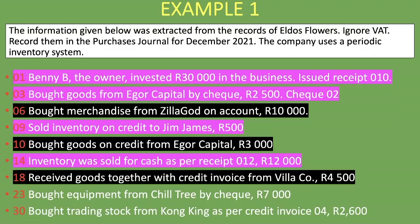We highlight the Villa Core transaction in black. On the 23rd, equipment was bought from Chilltree by check for 7,000 rand. This does not go into the purchases journal — it's equipment, not goods we resell, and it was not bought on credit. We highlight it in purple.